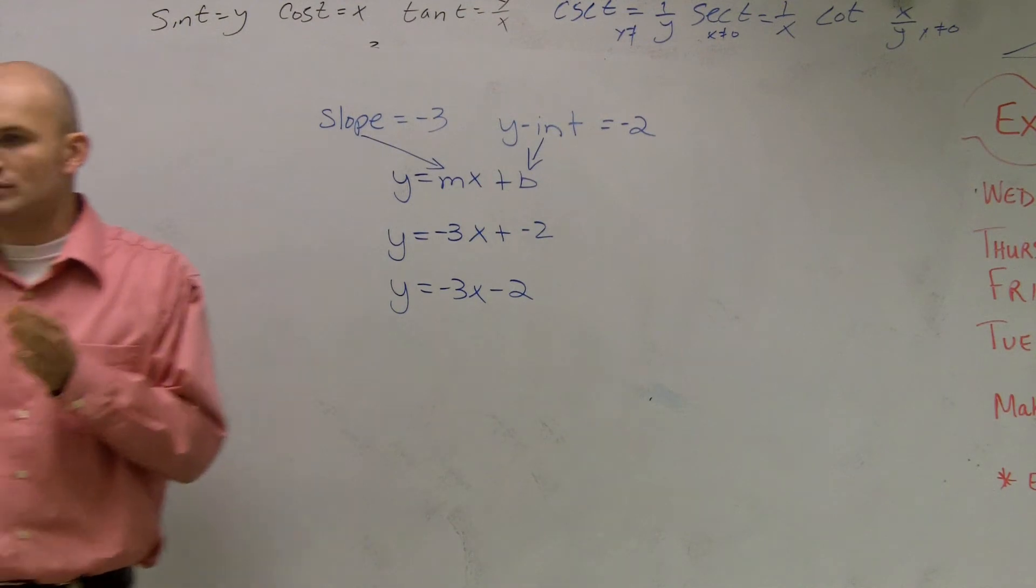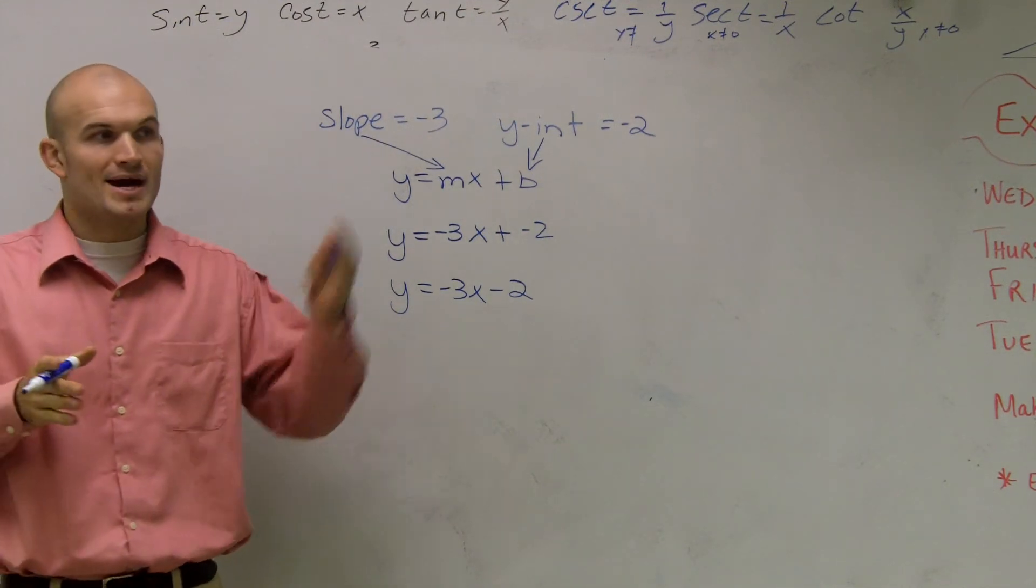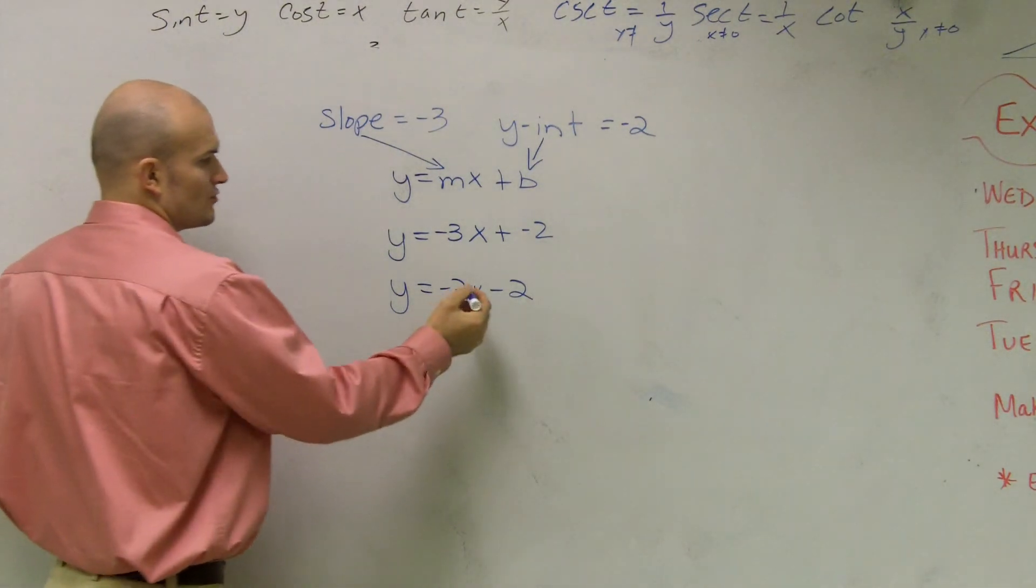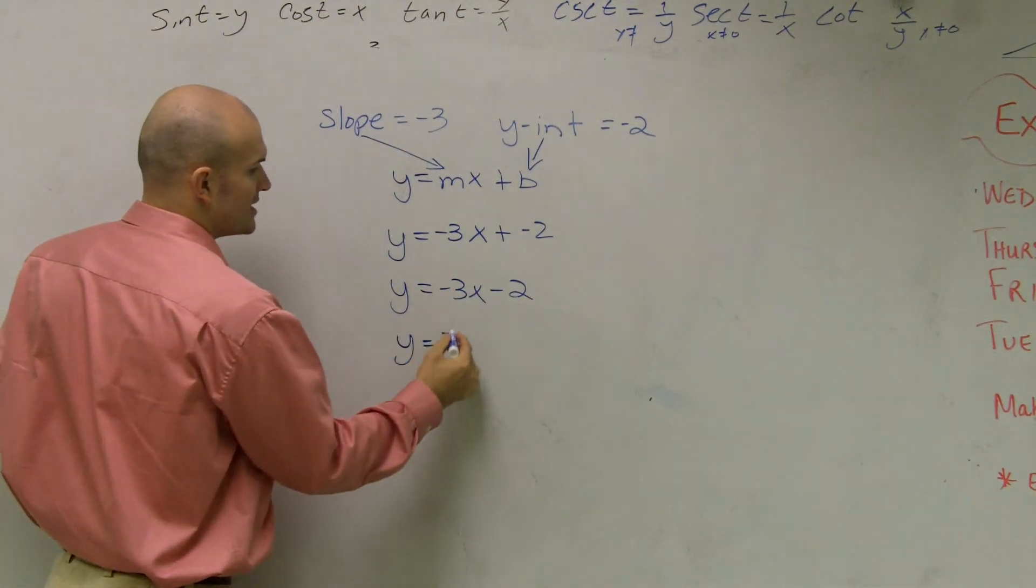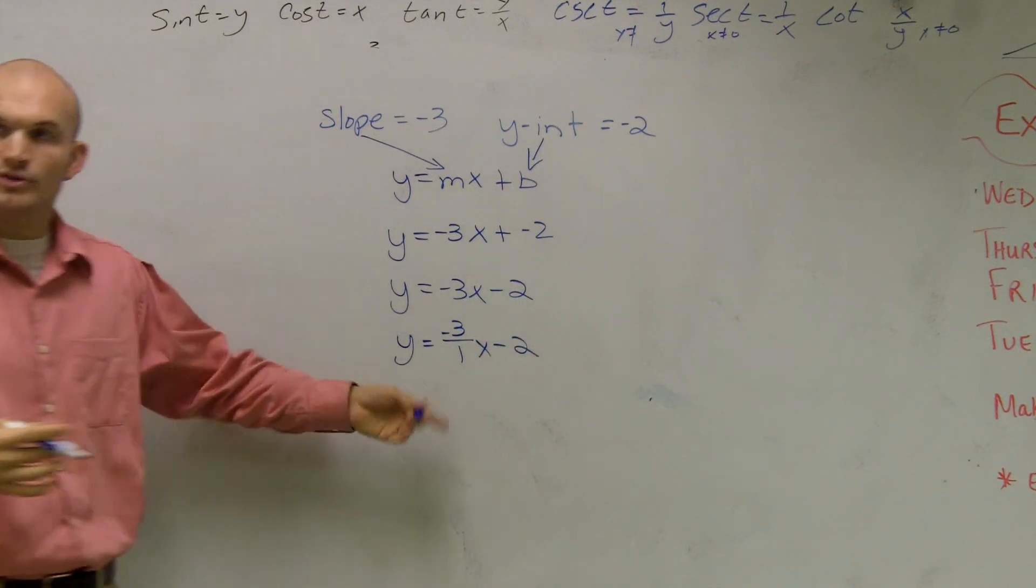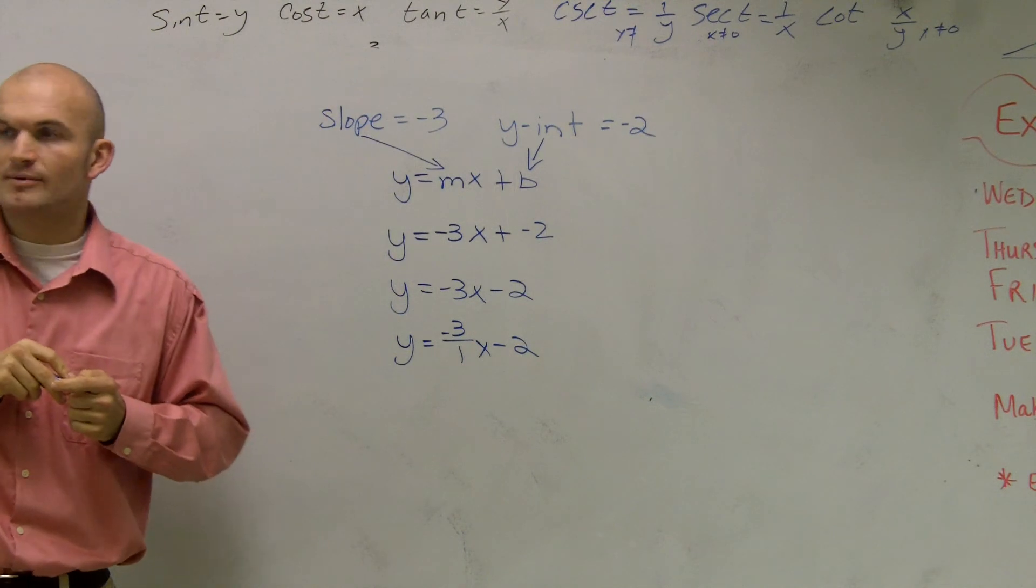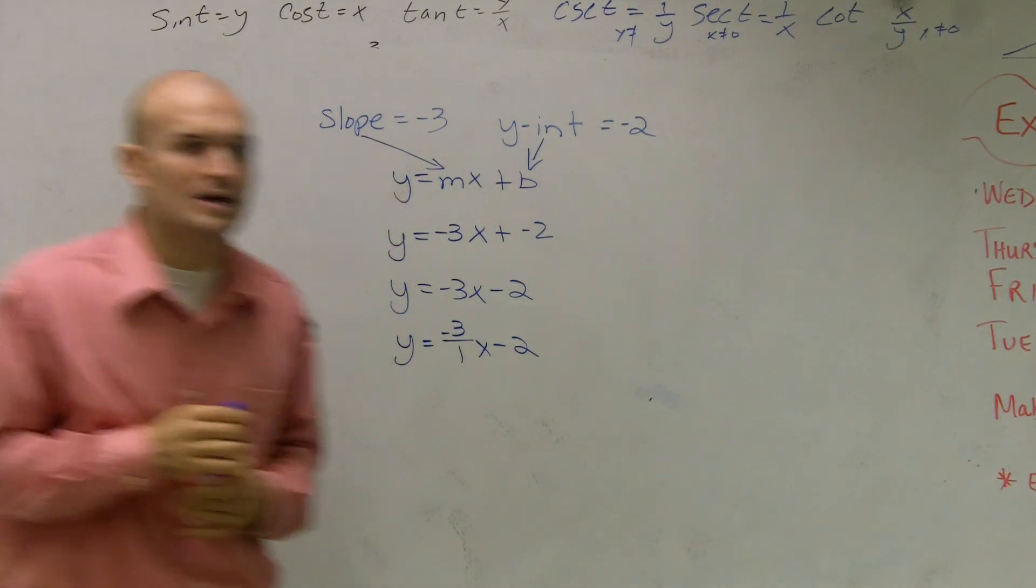And just remember, a lot of times when we're sloping, remember we do change of y over change of x, and we want to find the rise over the run. So you could also rewrite this as y equals negative 3 over 1x minus 2. You can always change the whole number as a fraction. That might help you when you're graphing or something like that. But for number 3, that's all I ask you guys to do.